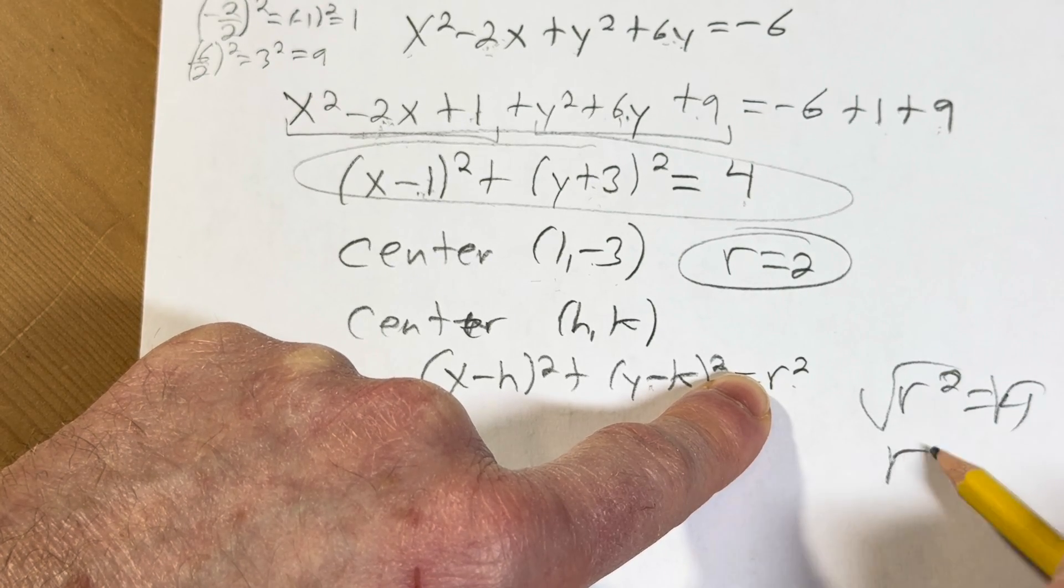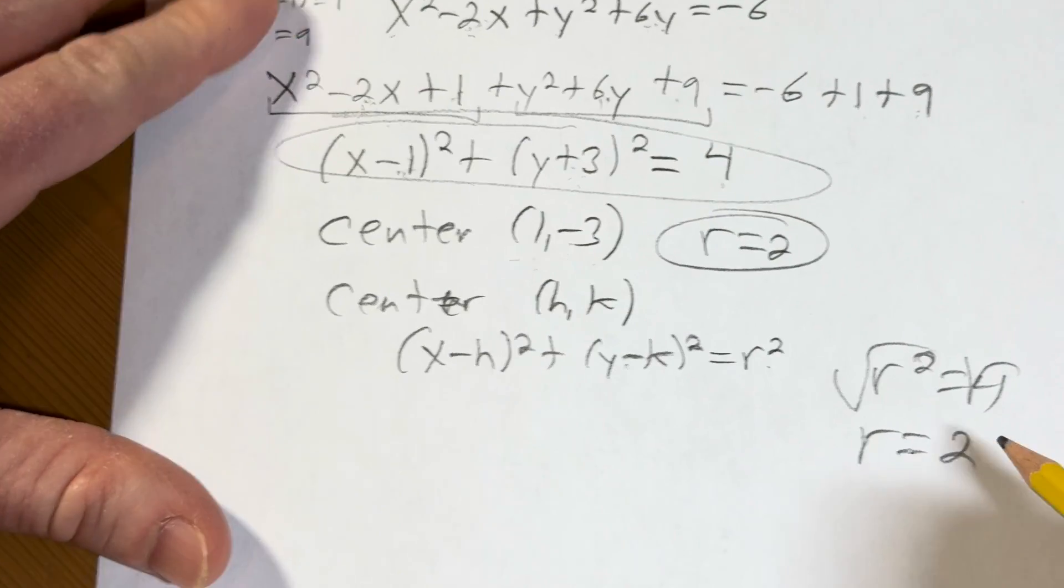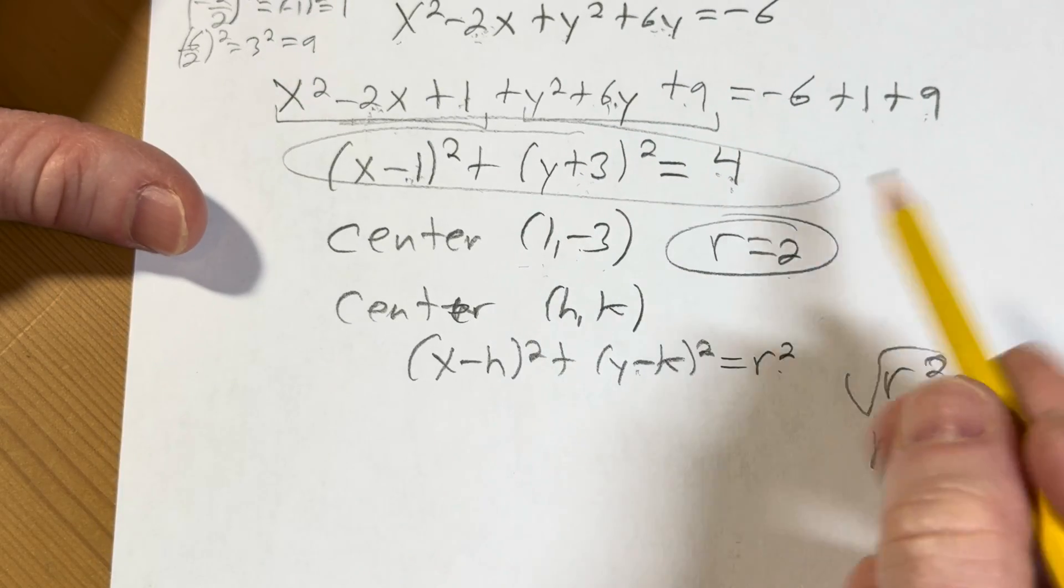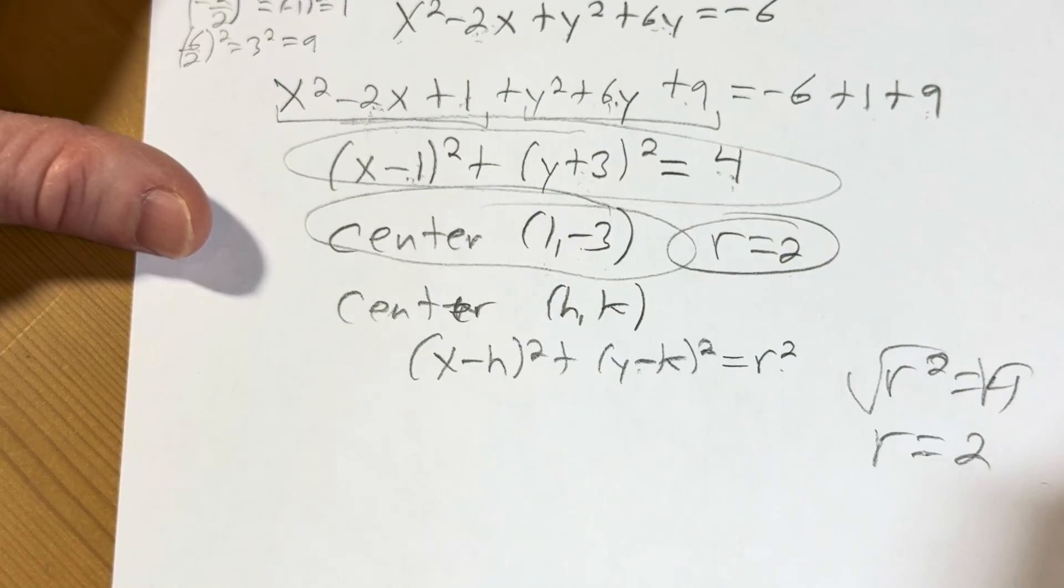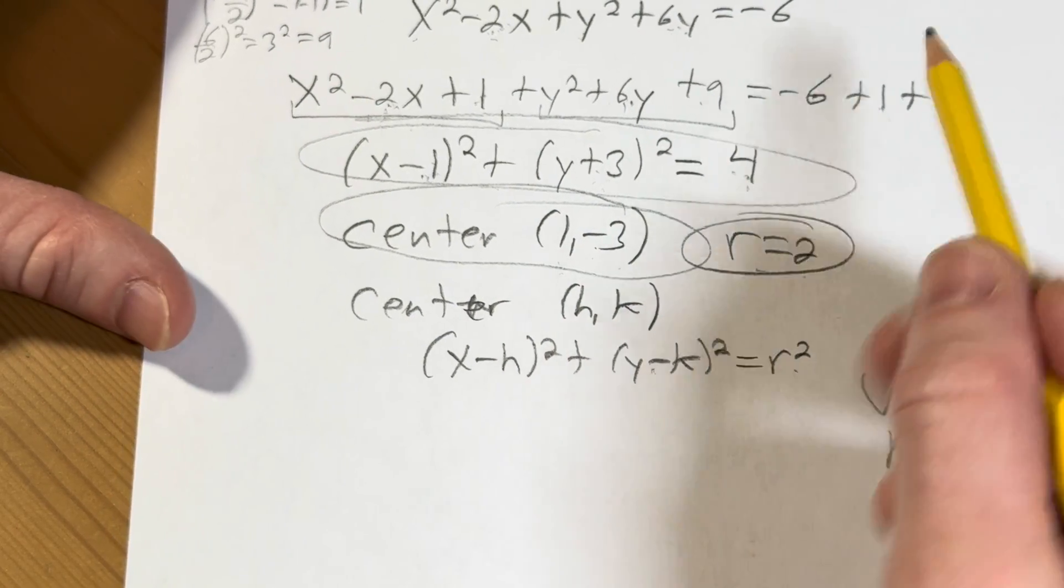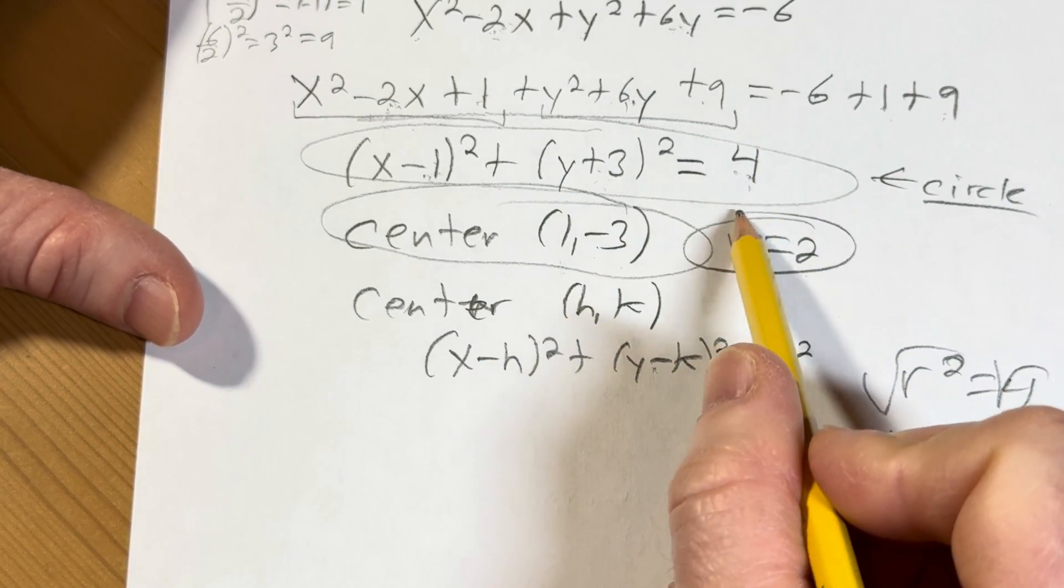Take the square root because r equals plus or minus 2, but r can't be minus because it's radius, so it's 2. Right, that's the idea. So you just take the square root of this number to get r. So we have our center, which is the ordered pair 1 comma negative 3. We have our radius, which is 2. And we have our equation, which is a circle. We know it's a circle because it fits this form.